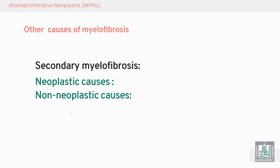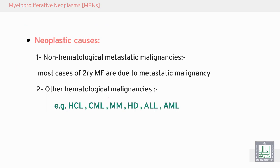Other causes of myelofibrosis may be secondary due to other neoplastic or non-neoplastic disorders. Neoplastic non-hematological causes include metastatic malignancies — mostly metastatic malignancy spreading to the marrow, such as prostate or bone metastases, leading to marrow fibrosis and failure of the marrow to produce normal cells.